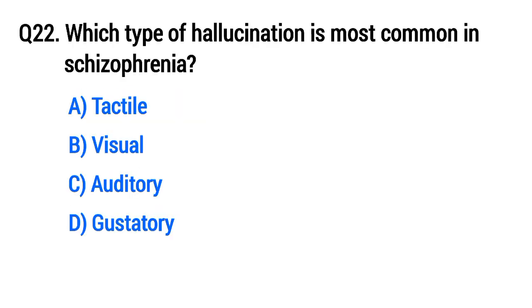Question No. 22: Which type of hallucination is most common in schizophrenia? The right option is C, auditory.